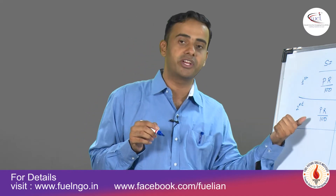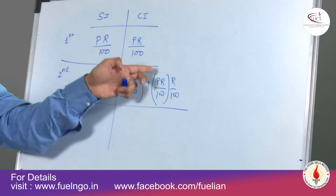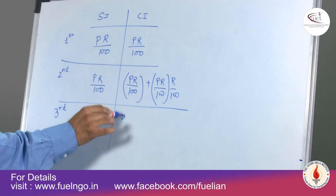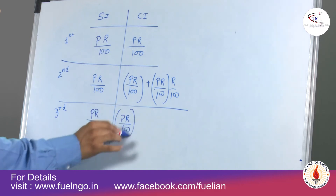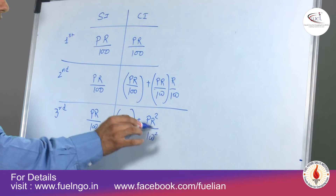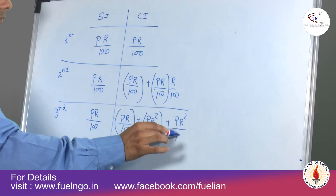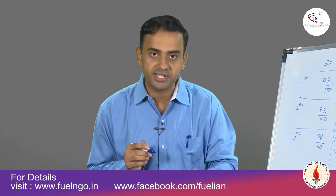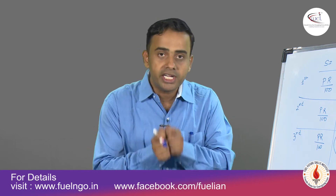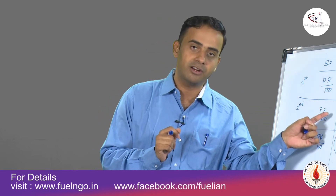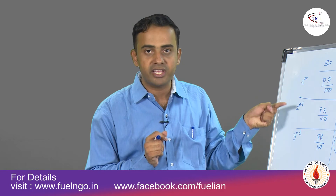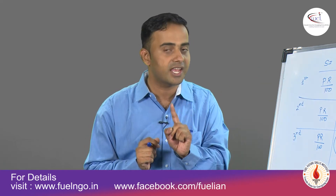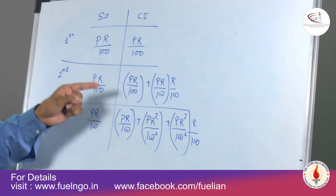When we get interest on interest, the term used is 'compounding.' There is no need to memorize formulas — it is very simple logic. At the end of the third year, for SI it remains P·R/100; for CI, successive terms add P·R²/100², and on that you get R percent again. Three fundamental rules: one, simple interest at the end of every year remains the same; two, simple and compound interest at the end of the first year are the same; three, compound interest at the end of every year keeps on increasing.